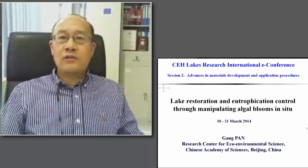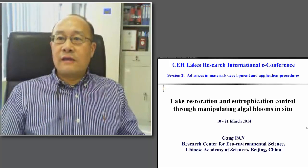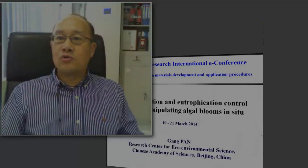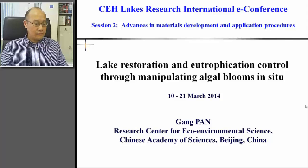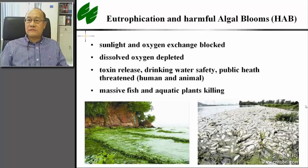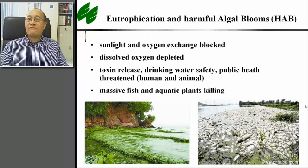The title of my introduction today is Lake Restoration and Eutrophication Control through Manipulating Algal Blooms. Eutrophication can cause harmful algal blooms, and HABs can cause sunlight and oxygen exchange to be blocked, dissolved oxygen depleted, toxin released, and massive fish and aquatic plant killing.